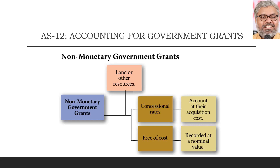If non-monetary grants are given at a concessional rate, they have to be accounted for at their actual acquisition cost. For example, government has granted 10 acres of land at the rate of 10 lakhs rupees each, whereas the market value may be 15 or 20 lakhs. The organization paid 1 crore total. So the entry will be: land account debit, bank account credit — whatever the actual cost of acquisition, that is what gets recorded.